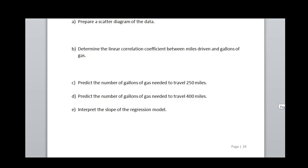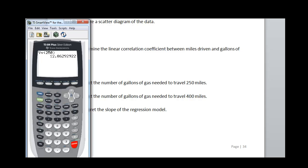If I wanted to interpret the slope of the regression model, looking back at our slope, we had a slope of 0.077. So I would say for each additional mile, it requires 0.077 gallons of gas to drive.